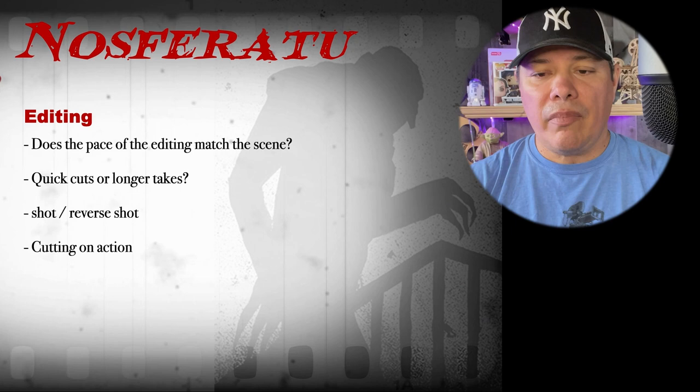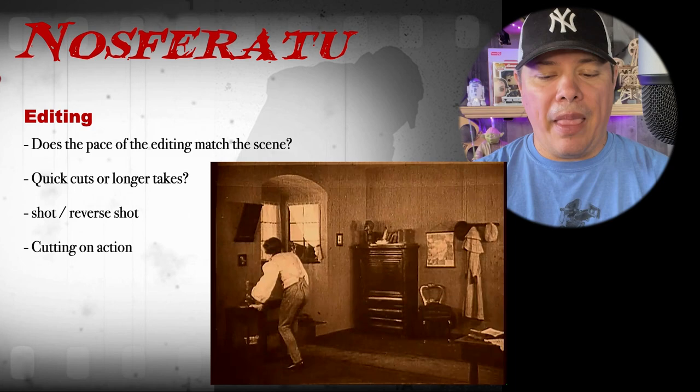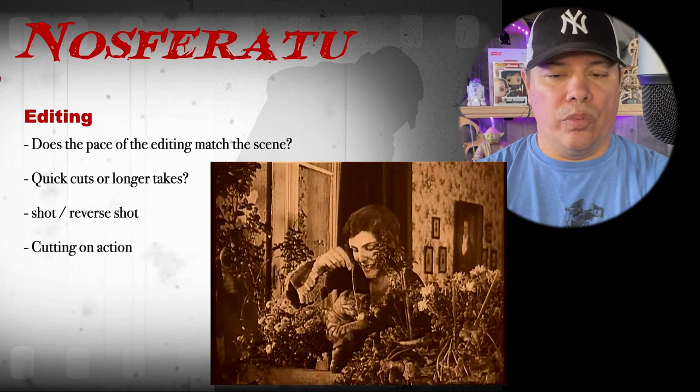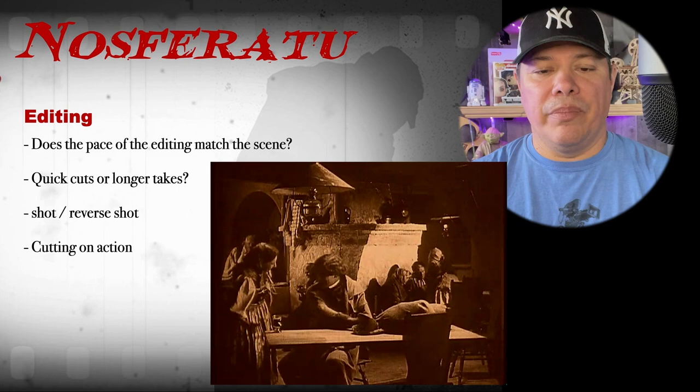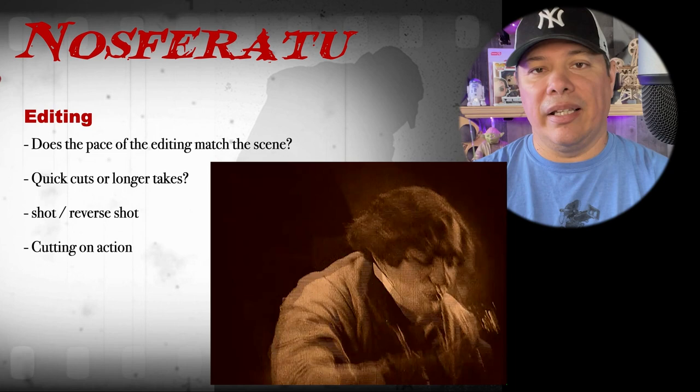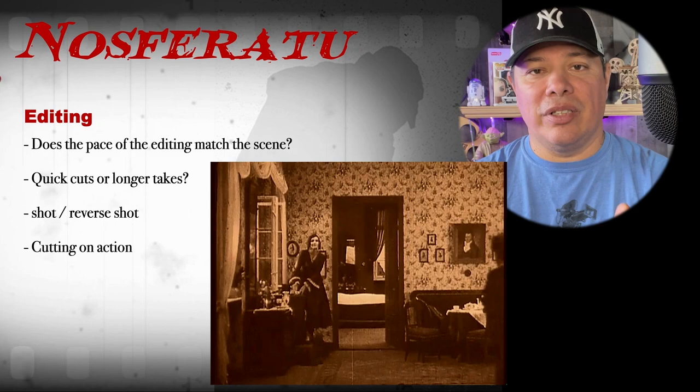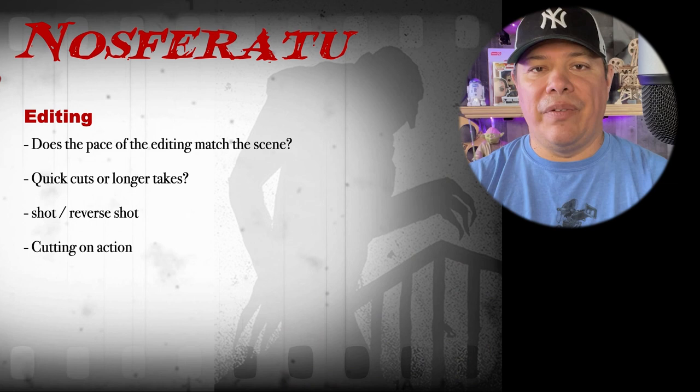First up is shot reverse shot — a shot of Hutter and then what he's looking at. It kind of starts to build the language of how cinema works. Right here, we're going to look at cutting on action. Sometimes it works well in this movie — if you look at this, he's taking a swig of a drink and the cutting on action is pretty good. But this other one, the timing is a little bit off, so it feels a little weird. Sometimes it works, sometimes it doesn't, but at least the language was there and they were developing that early in the 1920s.